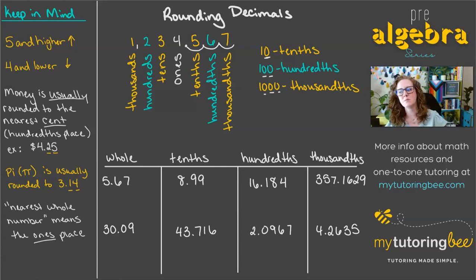Let's get into some practice problems, some examples down here at the bottom. The nearest whole number refers to the ones place, so the strategy that I like to use is just put a little slash right there after the place value that I'm being asked to round to. So I'm being asked to round to the nearest whole number.